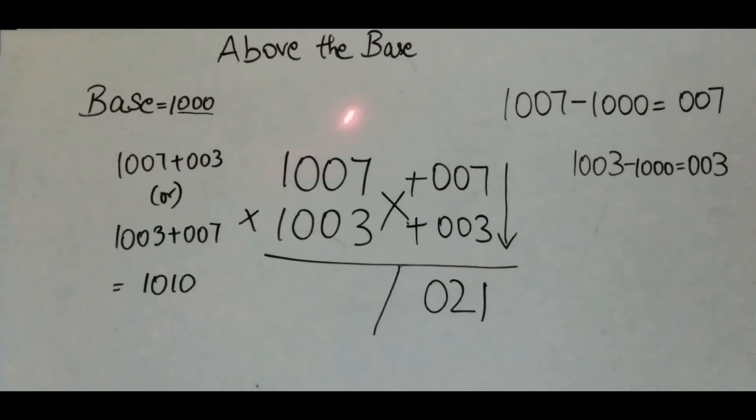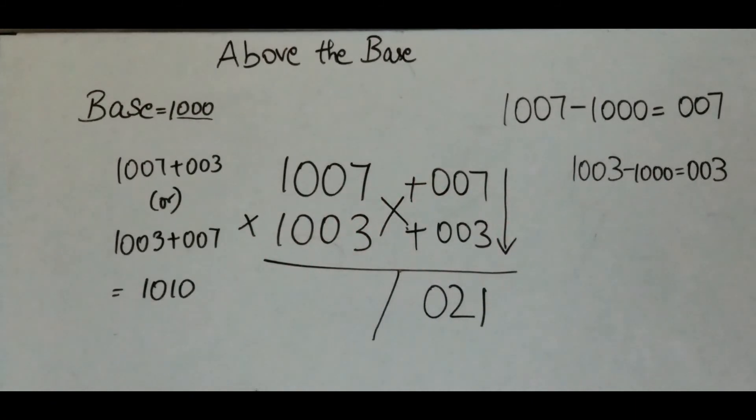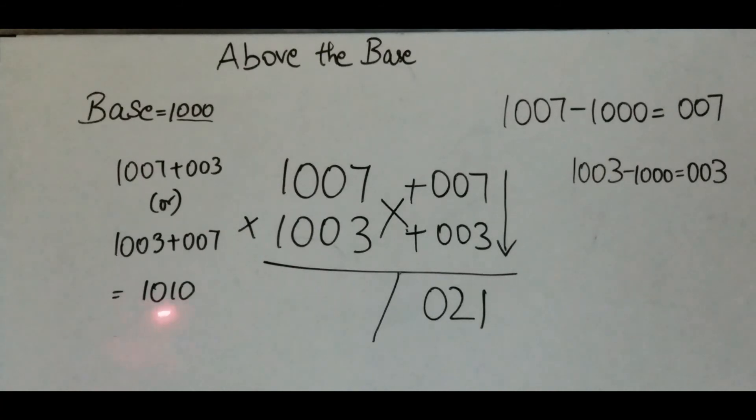For the left side, either do 1007 plus 003 or 1003 plus 007. They both give the same answer which is 1010. Write 1010 over here.